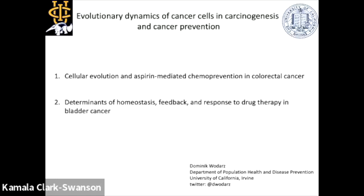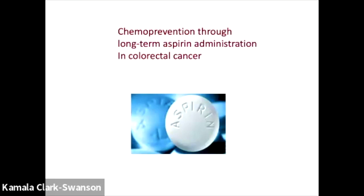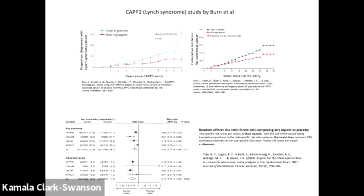We'll start with the first part: chemo prevention by aspirin in colorectal cancer. There's a lot of good data out there showing that if people take aspirin in the long term, the incidence of colorectal cancer is significantly lower. One study with Lynch syndrome, which is a genetic predisposition to colorectal cancer, shows very clear data as you can see on the graphs. And in general, also with sporadic colorectal cancer, there's a good amount of protection and there's good data to document this.